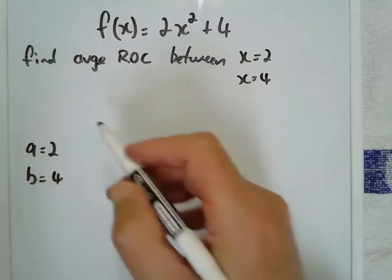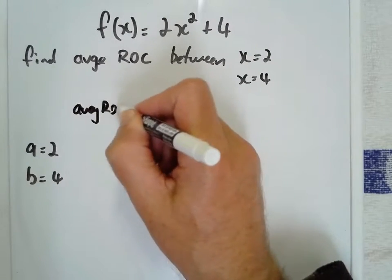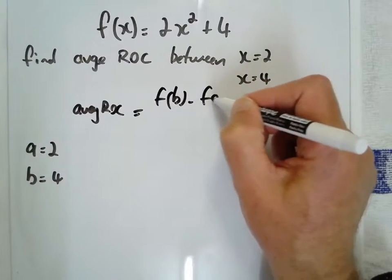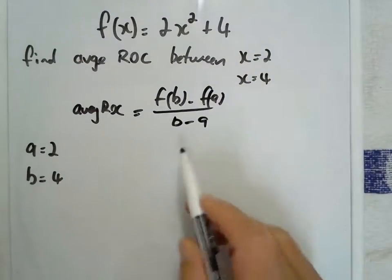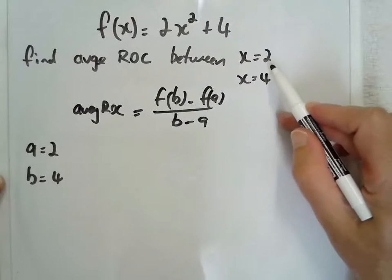We also need to write our rule, so the average rate of change equals f of b minus f of a over b minus a. That's why we needed to find what our A and B was. We're just going to establish that up front.